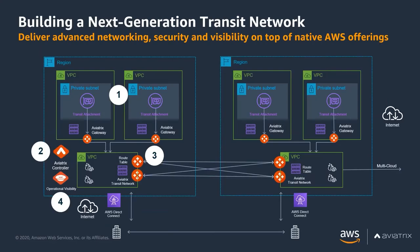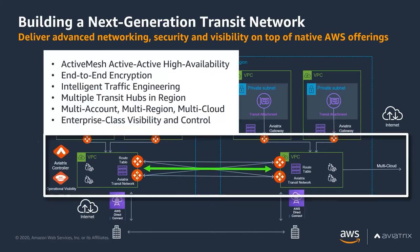Now let's look at the advanced controls in the picture of a next-generation transit. There are several pieces here: number one is all the capabilities delivered by the AWS infrastructure; number two is our controller; number three is the gateways deployed around the infrastructure; and number four is the operational visibility. From a transit perspective, you can see multiple gateways with full mesh connectivity for high availability. We do end-to-end encryption between any of these gateways, intelligent traffic engineering, and can have multiple transit hubs in region dealing with multi-account, multi-region, and multi-cloud. You can see this can be extended beyond one cloud into multiple clouds, along with the enterprise-class visibility and control that comes from this transit environment.